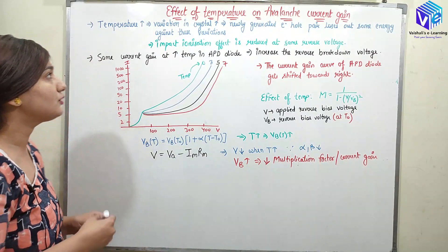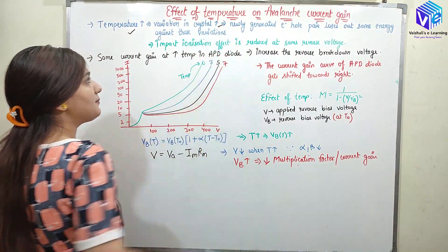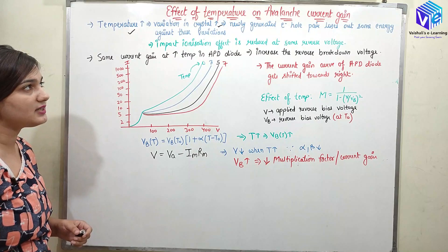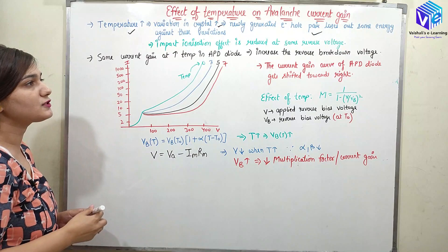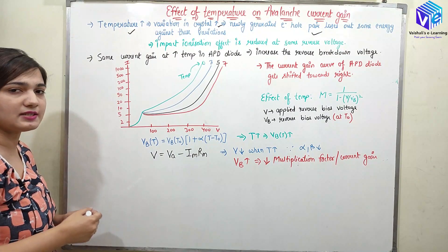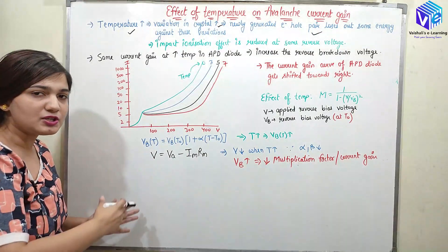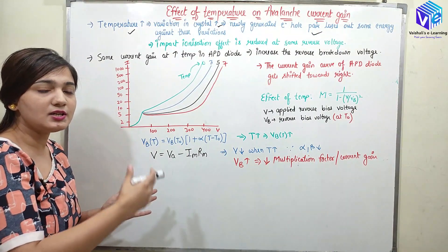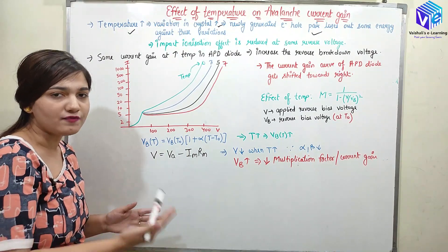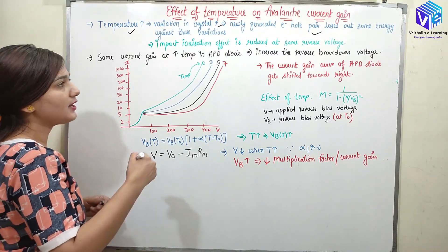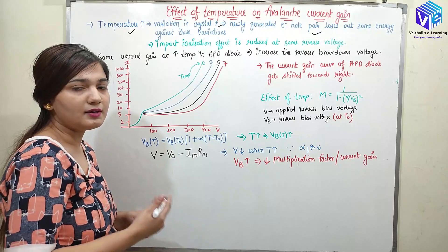So if I increase the temperature, the thermal vibrations in the crystal would be increasing. Newly generated electron-hole pairs lose out some of their energy against these vibrations. Temperature variation causes voltage variation. Due to this, we lose out some energy, and the breakdown voltage required is now increased.